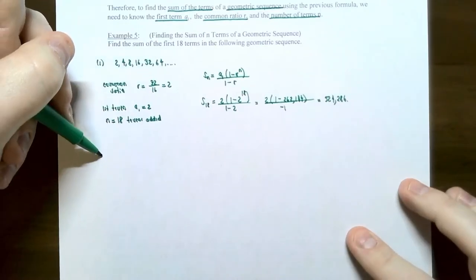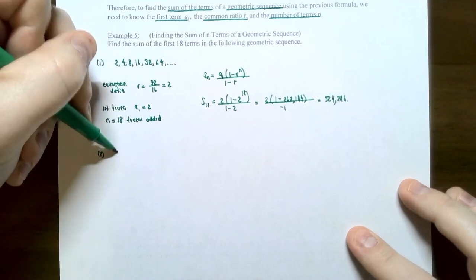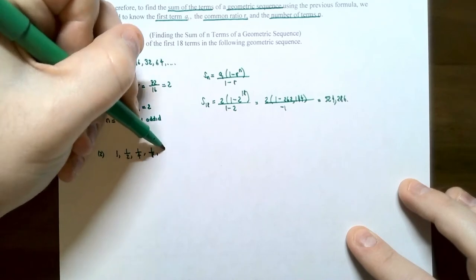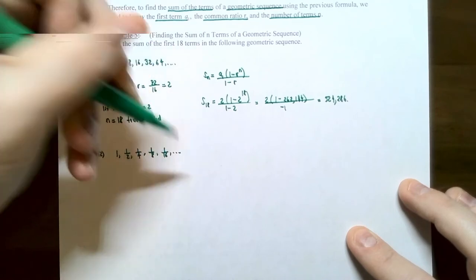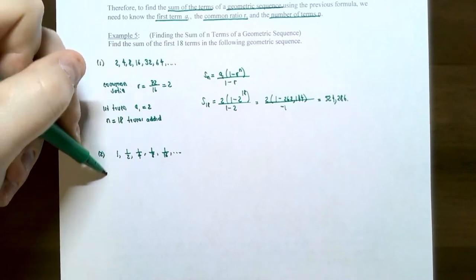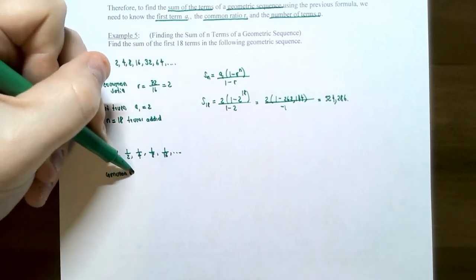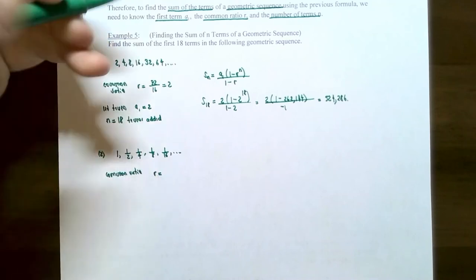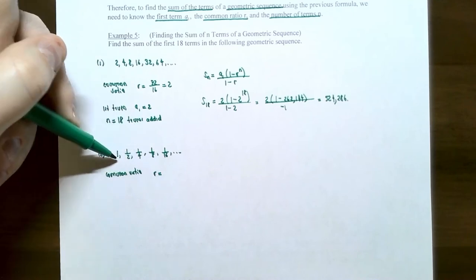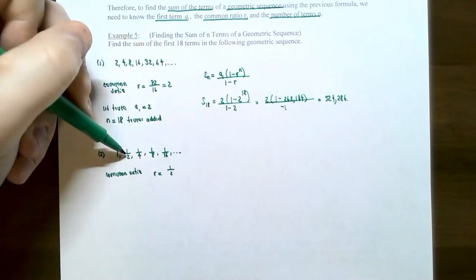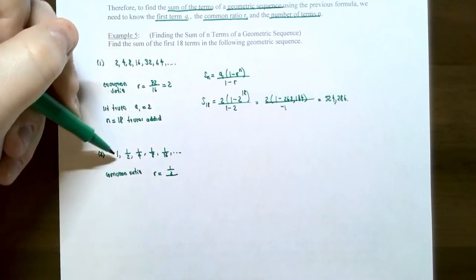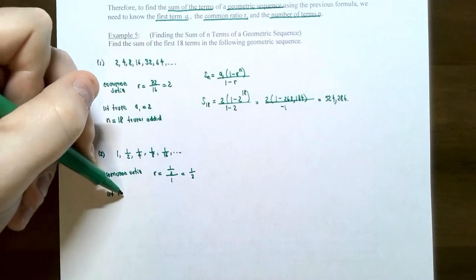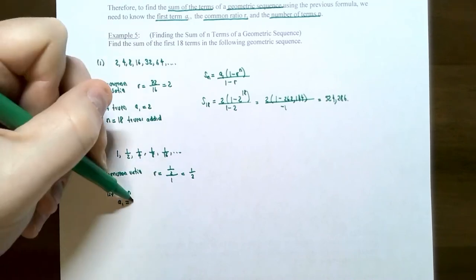Let's try a different sequence. Number 2: the sequence is 1, one half, one fourth, one eighth, one sixteenth, and so on. This is also geometric with a constant common ratio. Taking one half divided by 1 gives r equal to one half. The first term is a sub 1 equals 1.